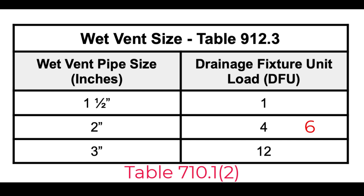Comparing to the table back in chapter 7: a two-inch pipe normally handles six drainage fixture units for a horizontal branch, and a three-inch pipe normally handles 20 drainage fixture units. There is a clear restriction on the number of DFUs allowed in a horizontal wet vent, and this restriction is what allows for additional airflow — keeping the pipe big enough to handle those fixtures while also allowing airflow. This is why wet venting works.